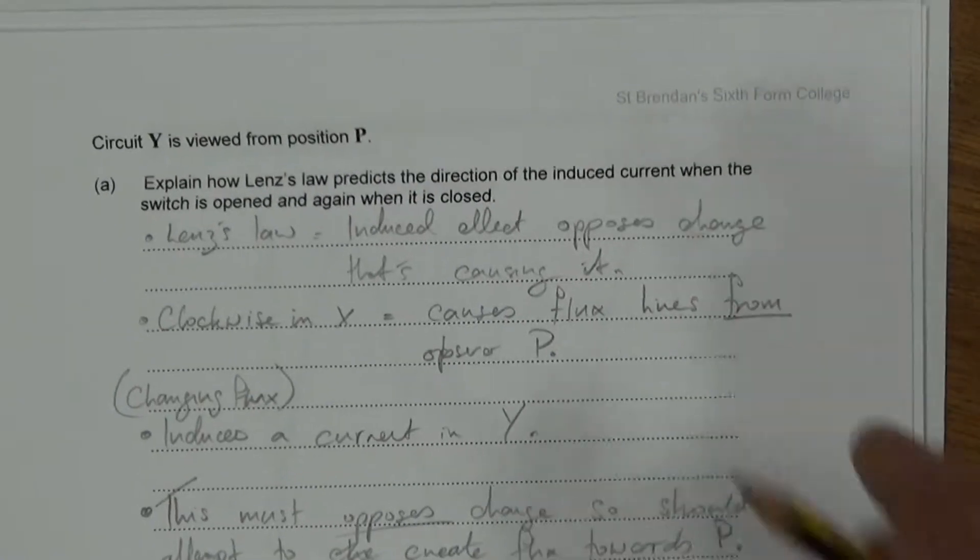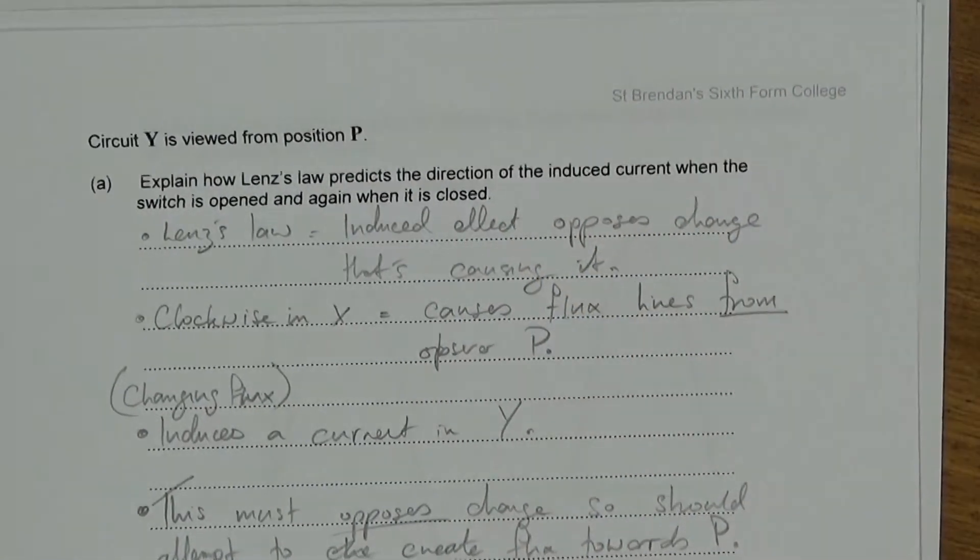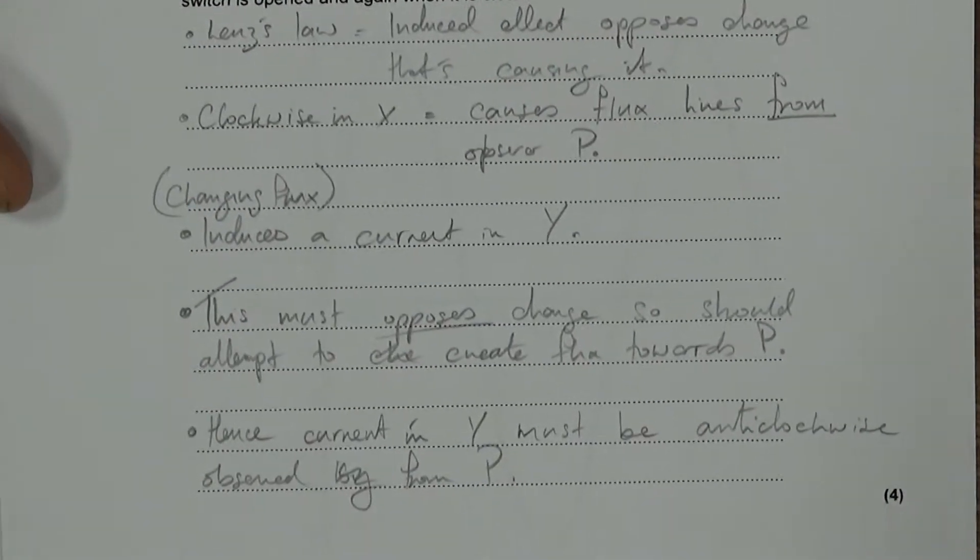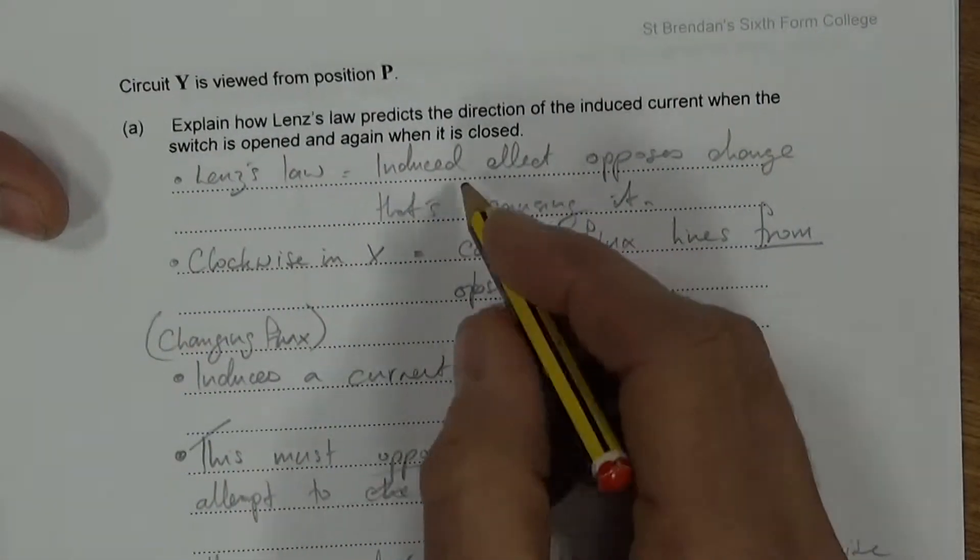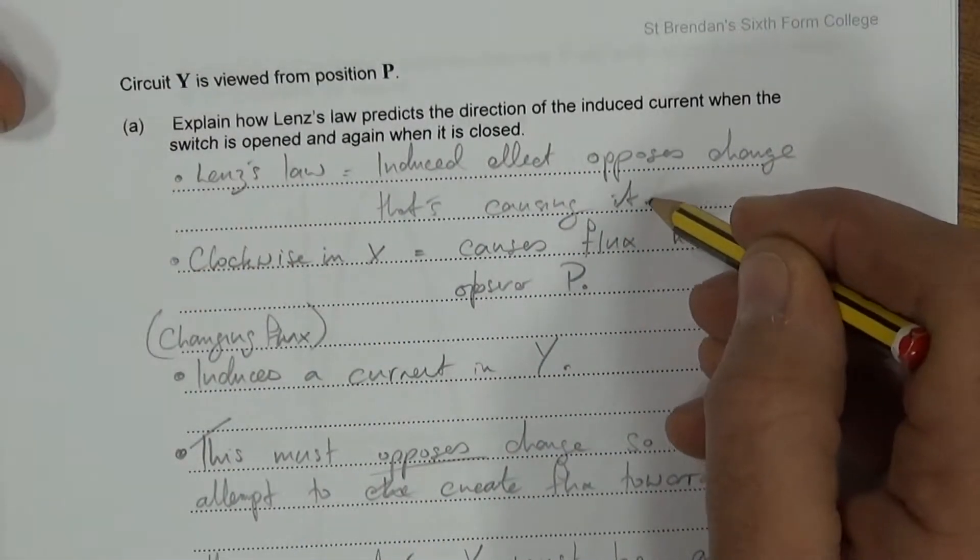And then the question says, explain how Lenz's law predicts the direction of the induced current when the switch is open and when it's closed. Oh, I didn't do when it's closed. I've only got halfway through this. Okay, so Lenz's law tells us the induced effect opposes the change it's causing. That's the first thing.